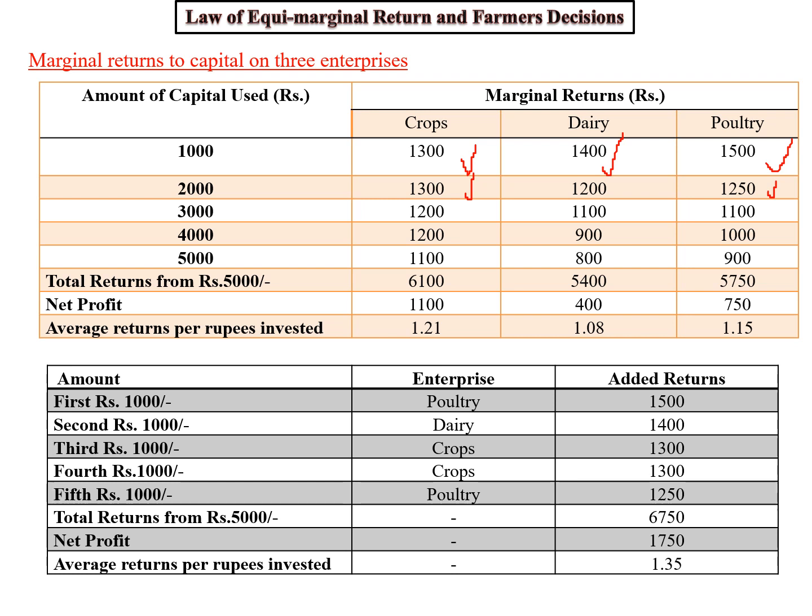If the farmer makes decisions based on marginal return — picking those enterprises where added return is higher than added cost — these are the best enterprises for the farming community. Accordingly, investing the full 5,000 rupees guided by higher marginal return will give 6,750 rupees, which is quite higher than the average return of all three enterprises shown in the first table. Choices for the decision-making process should always be inclined toward marginal return rather than average return.